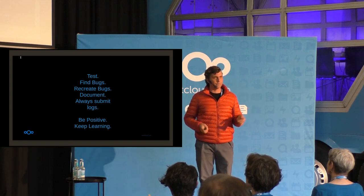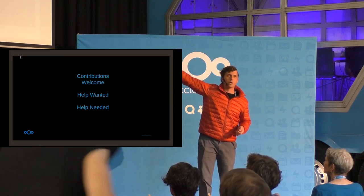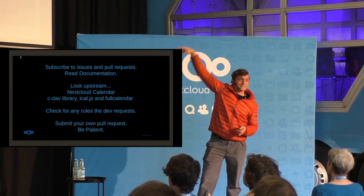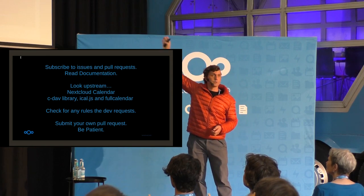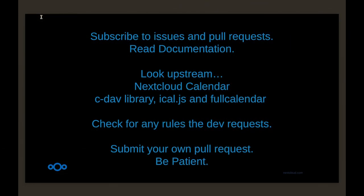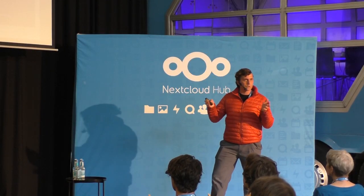Never feel like you're some authority figure - you're just always in process. What you're looking for is labels like 'contributions welcome,' 'help wanted,' 'help needed,' 'pull requests wanted.' This is the sort of process I would do: subscribe to issues and pull requests in GitHub. You don't need to comment - you can just subscribe and watch them. It's like a slow conversation that's happening over years; it's not a fast race. You can read documentation and also look upstream. If you're interested in the Nextcloud calendar, look at Sabre Dev, the CDev library, iCalJS, full calendar - there are all these other projects connected to it. It's not just the Nextcloud calendar team making Nextcloud calendar. There's always more to learn and experiment with.